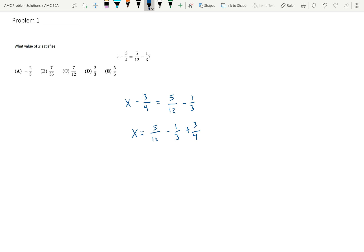I want a common denominator. I know 1 third is equal to 4 twelfths, and I know 3 fourths is equal to 9 twelfths.